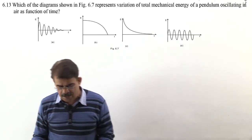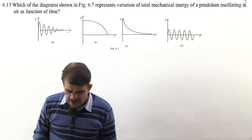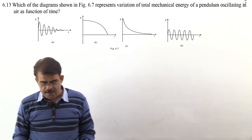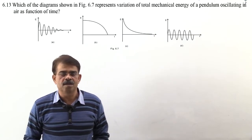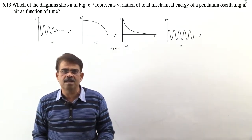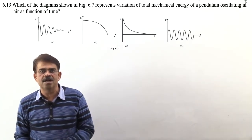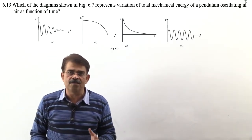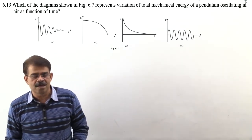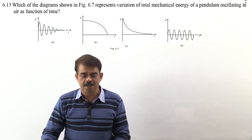Now next question 6.13: Which diagram shown in figure 6.7 represents variation of total mechanical energy of a pendulum oscillating in air as function of time. When a simple pendulum oscillates in air, then its oscillations are damped oscillations. Some energy is spent in overcoming air friction. Its energy and amplitude, both decrease exponentially with time. And after infinite time, after very long time, its oscillations die out. That means we must remember energy decreases exponentially with time. And therefore option C is correct.